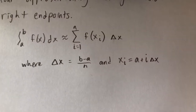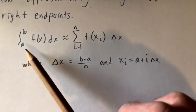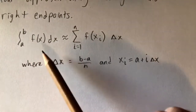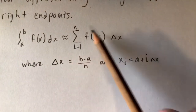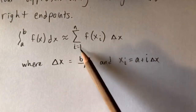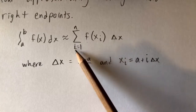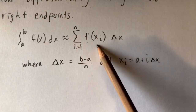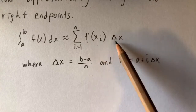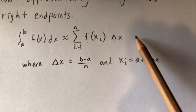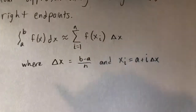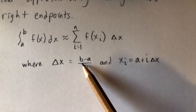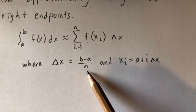The right endpoint rule says that the integral from a to b of some function can be rewritten as a sum: the sum from i equals 1 to n of f of x sub i times delta x, where delta x is basically just the distance you're stepping, which is b minus a all divided by n.